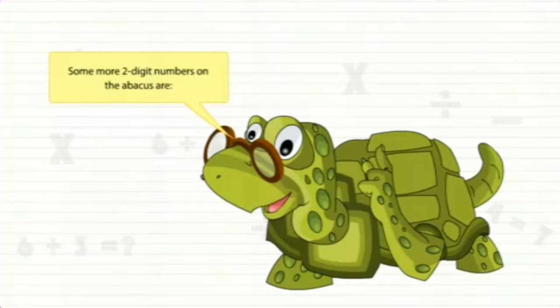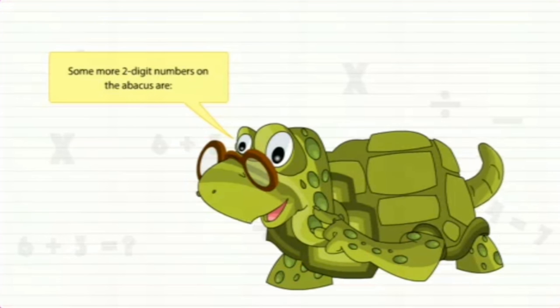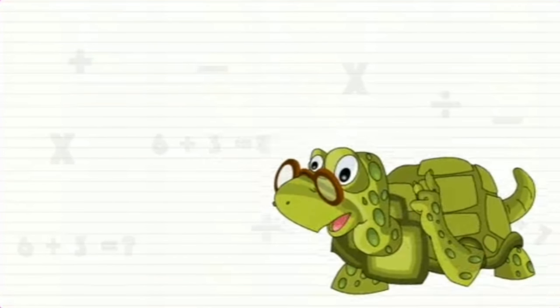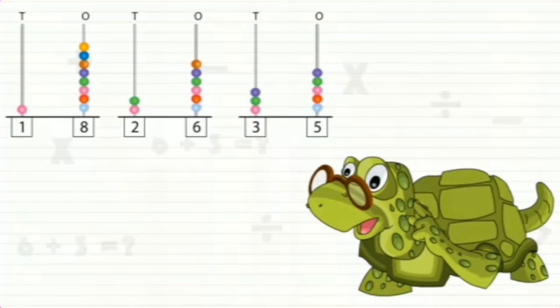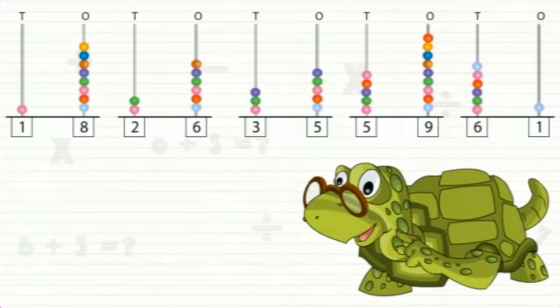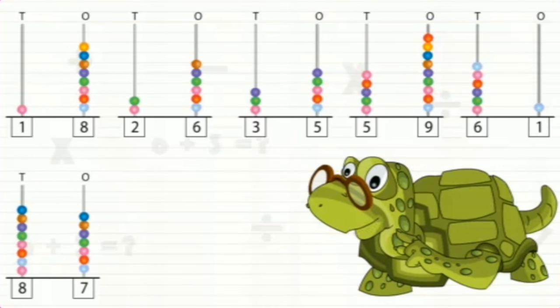Some more two-digit numbers on the abacus are 18, 26, 35, 59, 61, 87, and 99.